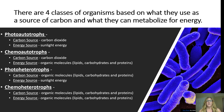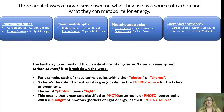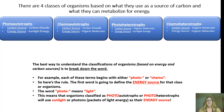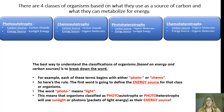There are four classes of organisms based on what they use as a source of carbon and what they can metabolize for energy: photoautotrophs, chemoautotrophs, photoheterotrophs, and chemoheterotrophs. When looking at these terms, it's best to break down the words individually. Each term begins with either photo or chemo. The first word defines that organism's energy source. The word photo means light — as in sunlight — so photoautotrophs and photoheterotrophs use sunlight or photons as their energy source.